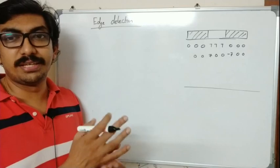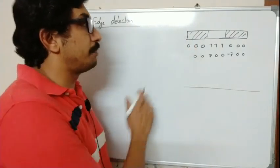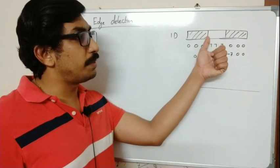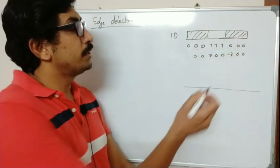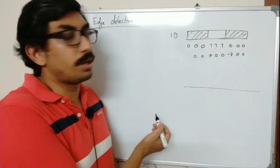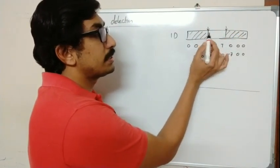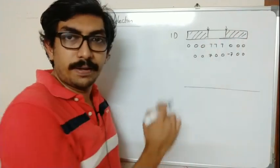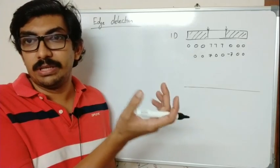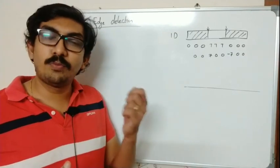Consider an image as a 1D array. The initial area is black, followed by white, and again black. The values are 0 0 0 7 7 7 0 0 0. Here you can see there is an edge at the transition from black to white, and again from white to black. An edge can be defined as a change in intensity value — a change in intensity value is called an edge in an image.